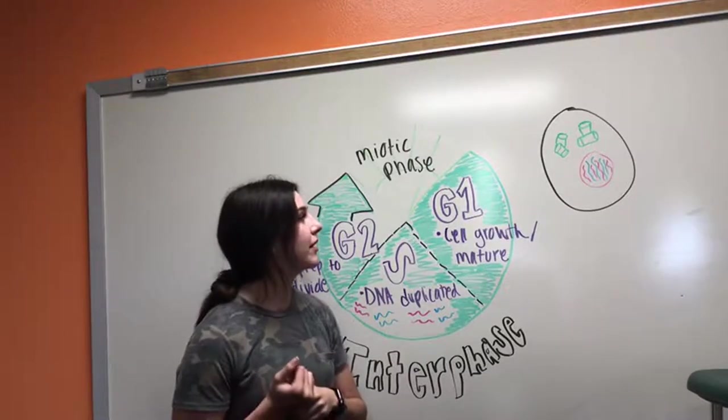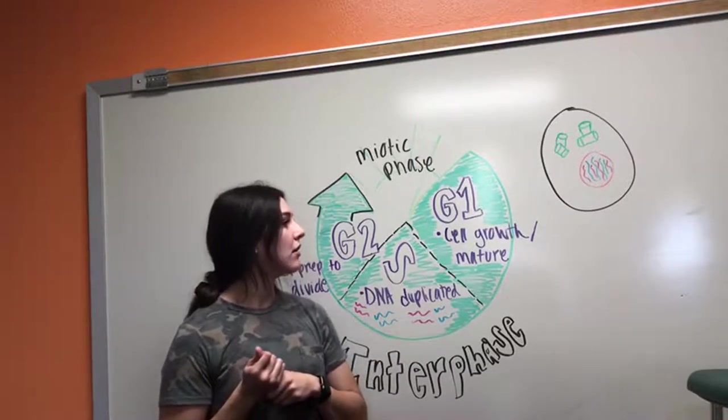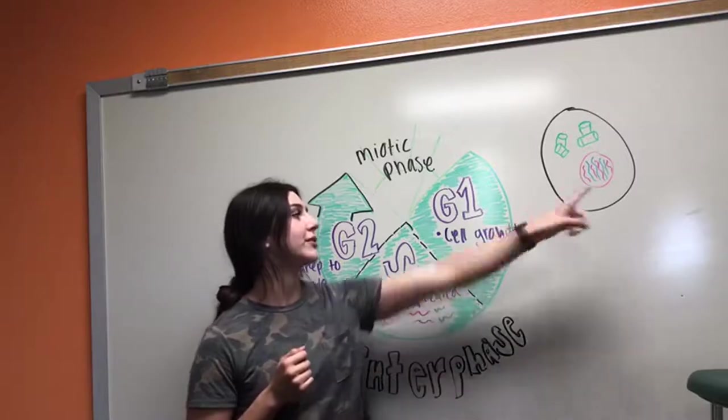The organelles are also doubling in number, and DNA condenses into the chromatin, which is right here.